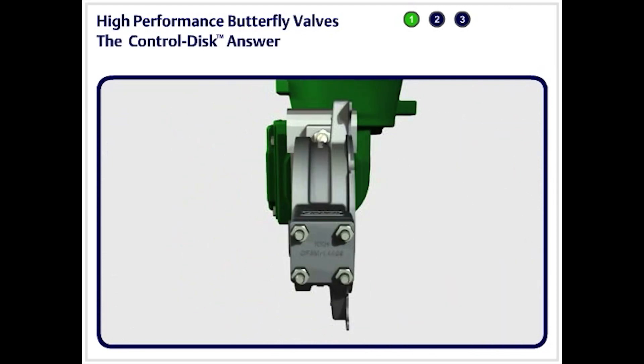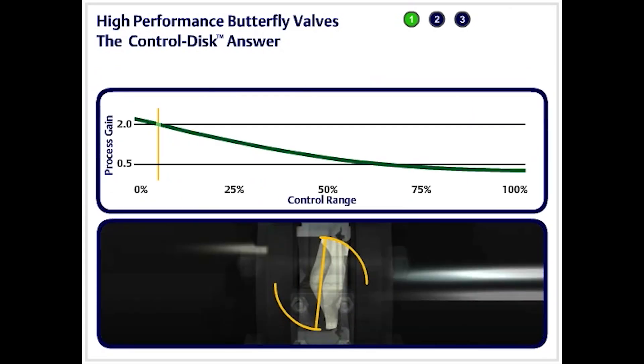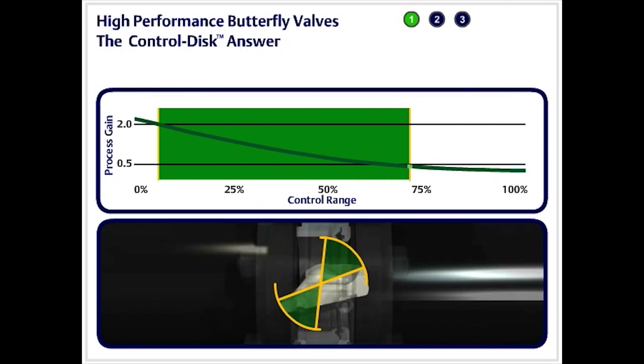Now there is an answer to this control range dilemma—the Fisher control disk. The control disk valve stretches the control range to begin at 10% open and extends the range to 70% travel. That's a 300% increase in application coverage.